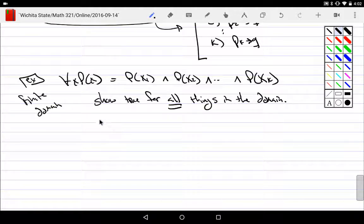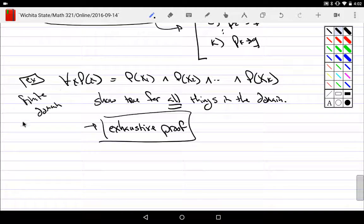If you show true for all things in the domain. Yes, this is still a proof by cases, but it usually gets a special name, which is not proof by cases, but rather what's called an exhaustive proof. It's still a proof by cases, but since we handled an entire finite domain, we give it its own little special name, which is proof by exhaustion or exhaustive proof. You definitely would say that the word exhaustive applies if this domain is finite, but say, a hundred numbers. You have to do a hundred cases one at a time.